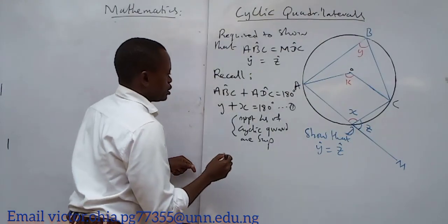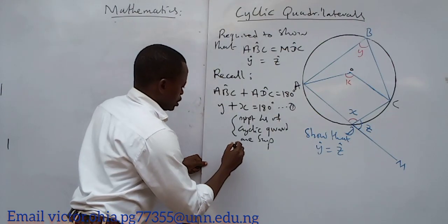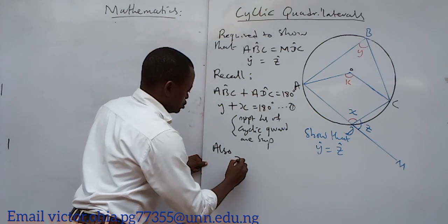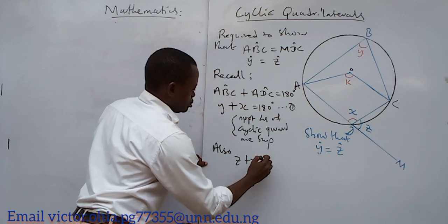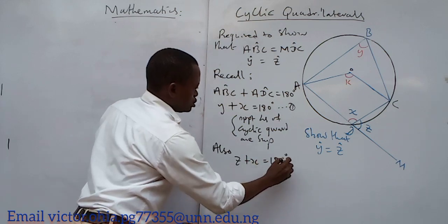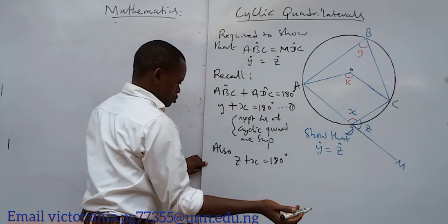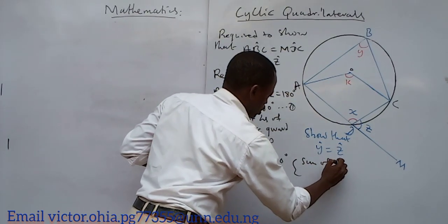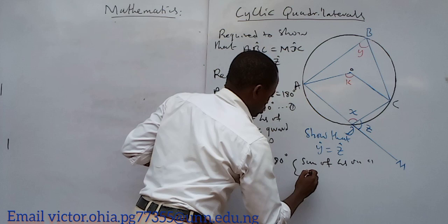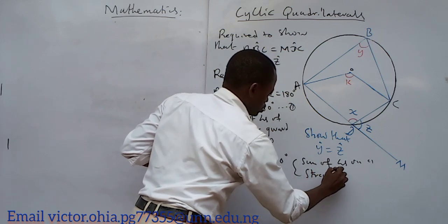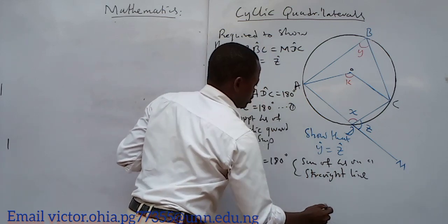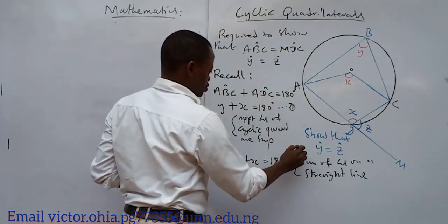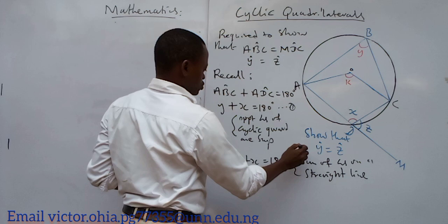Then I will come back again and I will also say that z plus x equals 180 degrees, like this plus this. Sum of angles on a straight line. I think that one is so simple it doesn't need any—we know that. Let me call this equation two.